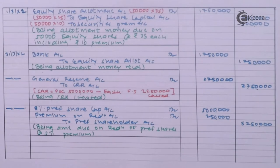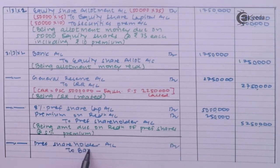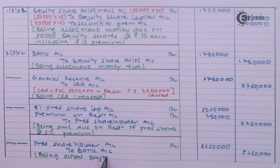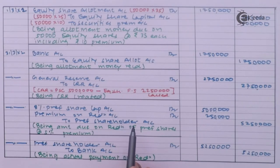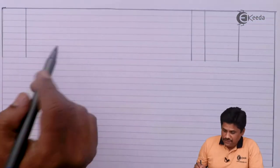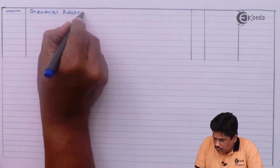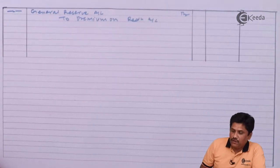When making actual payment on redemption: preference shareholder account debit to bank account Rs 52.5 lakhs — being actual payment on redemption. After paying, the premium on redemption is written off from the free reserve, which is only the general reserve. Last entry: general reserve account debit to premium on redemption account Rs 2.5 lakhs — being premium on redemption written off.